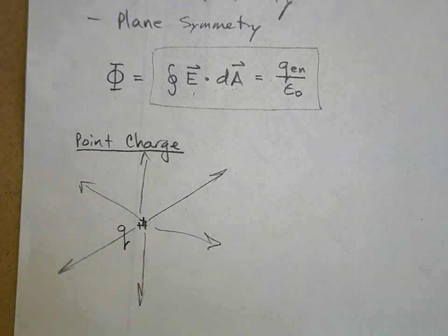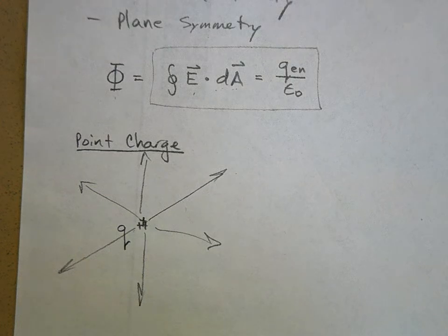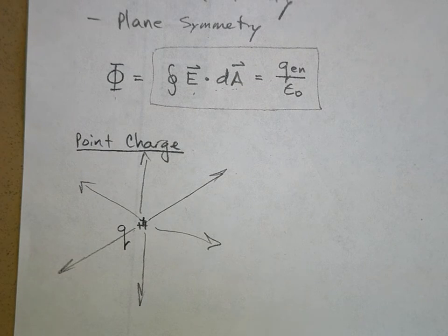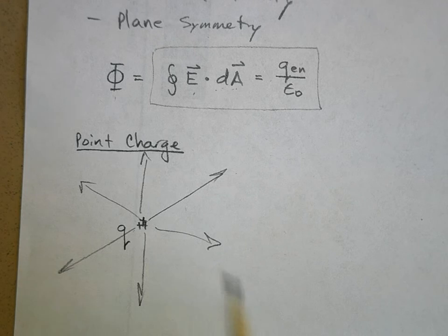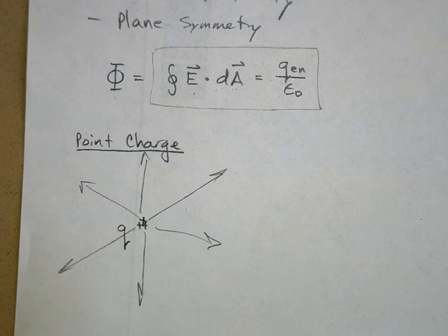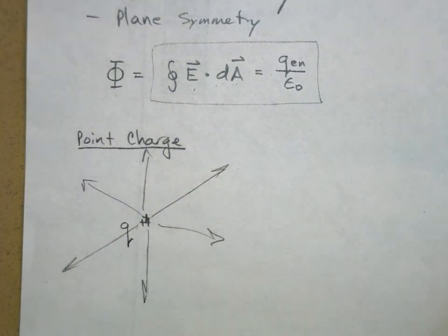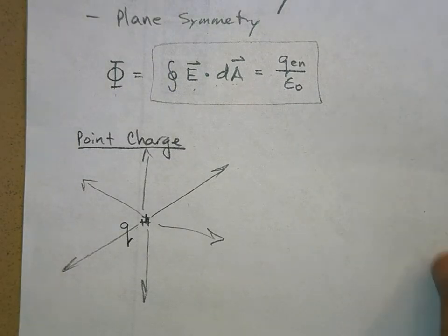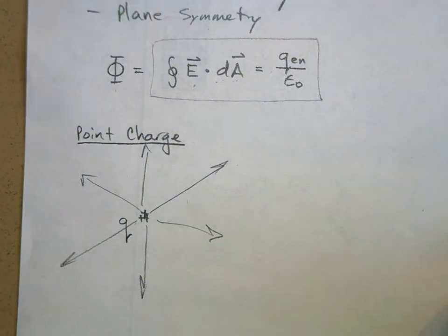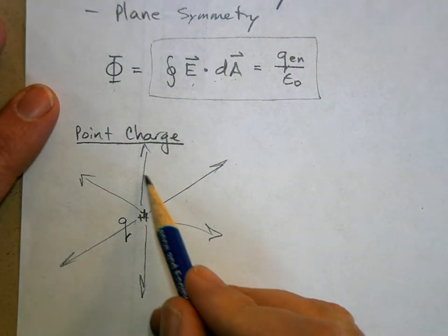Our goal is to figure out what the electric field is at any distance away from that point charge. When you look at the charge distribution and ask what kind of symmetry it gives to the electric field, it spreads out spherically in three-dimensional space. So whenever you have a point charge, you surround it with a sphere — the Gaussian surface is going to be a sphere.